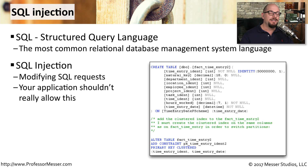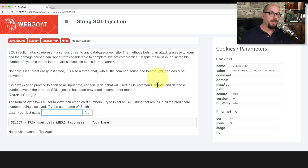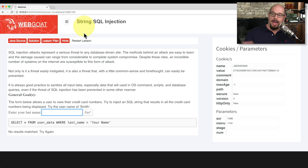If you can find a way to have your own requests go into the database, then you can effectively look through the entire database for information without technically having permission to do so. Obviously, the application shouldn't allow this, but if the application isn't written correctly, you might have more access to the database than anybody realizes.